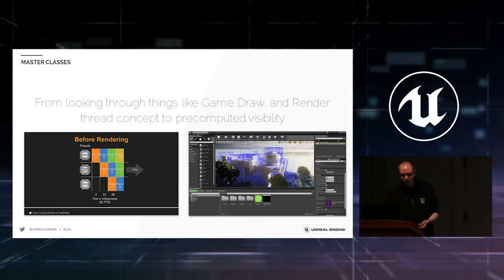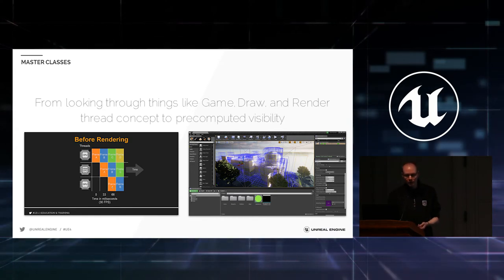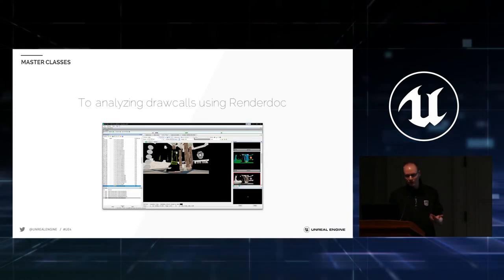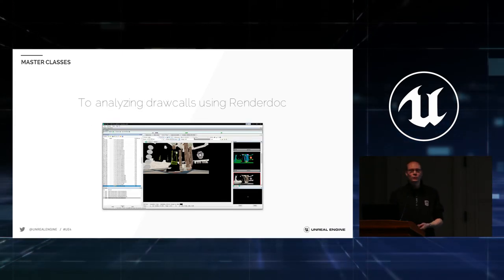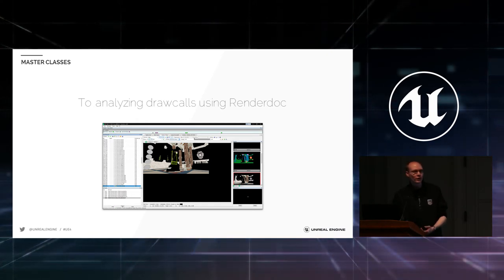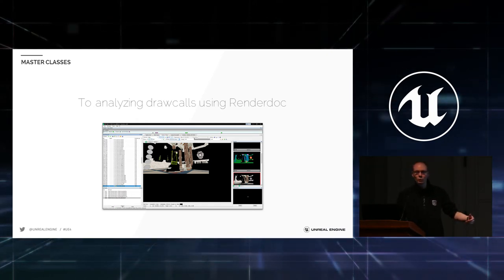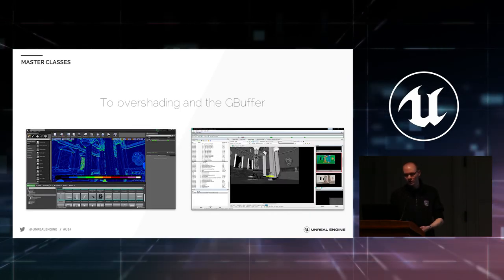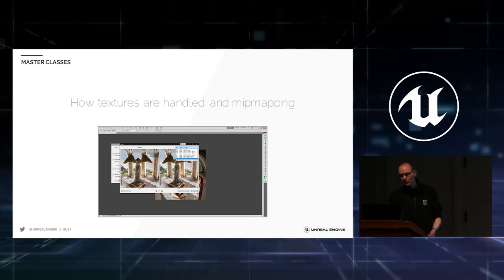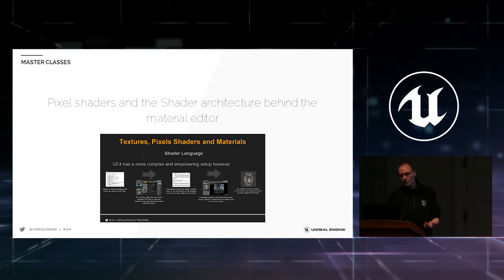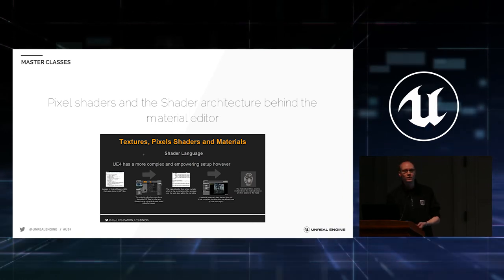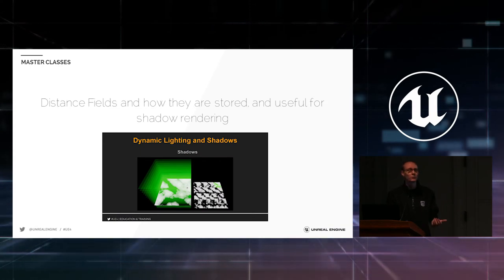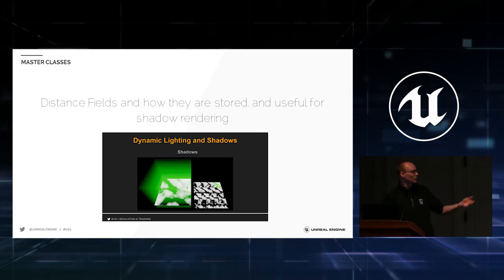I'm just going to step through a couple of the things it covers relatively quickly. It goes through things like the game draw and render threads, how that works out, visibility, draw calls — we analyze them using RenderDoc. What are draw calls? How do they impact performance? How do they impact workflow? When should you be careful with them, when should you maybe be less careful with them? Over-shading, G-buffer, how textures are handled with mipmaps, pixel shaders, the general partial textures of shaders behind the material editor. Reflections, SSR, reflection captures, distance fields — a lot of information about lighting and shadows in general, including distance fields.